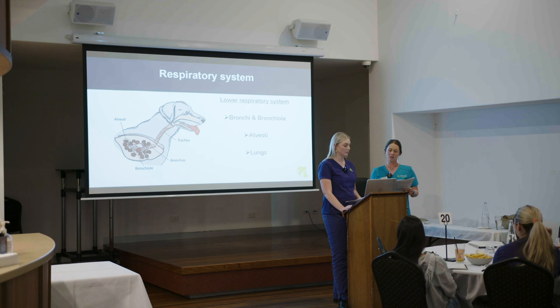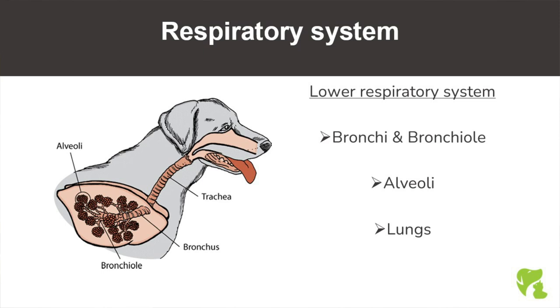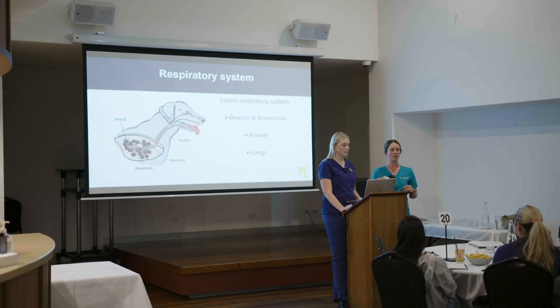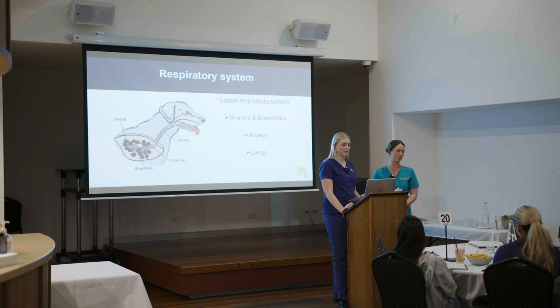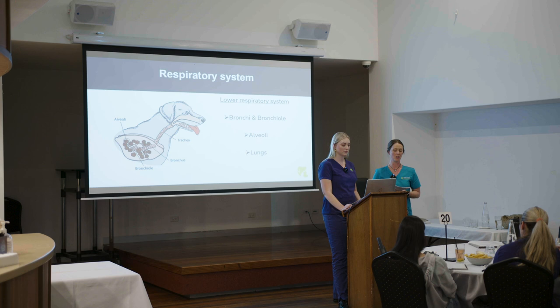The lungs have four lobes on the right side and two on the left side of the body. A relevant medical term is atelectasis, which refers to partial or full collapse of the lung. This can affect a patient's gaseous exchange, and during anaesthesia this exchange might not happen as well as it should. Atelectasis can take hours to days to resolve and is something to consider in recumbent patients or those under anaesthesia for a long period in a certain position.